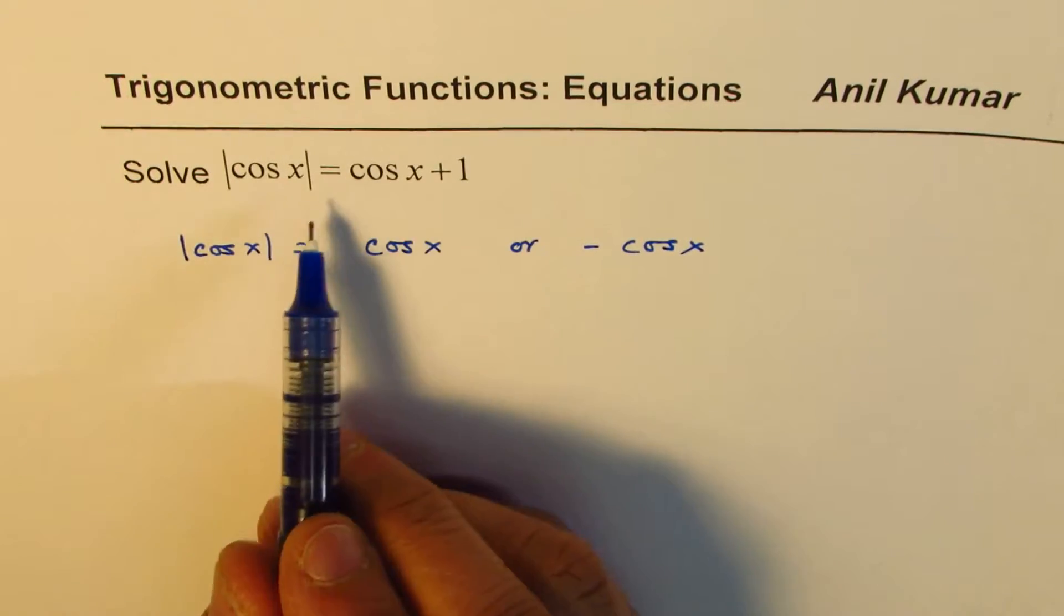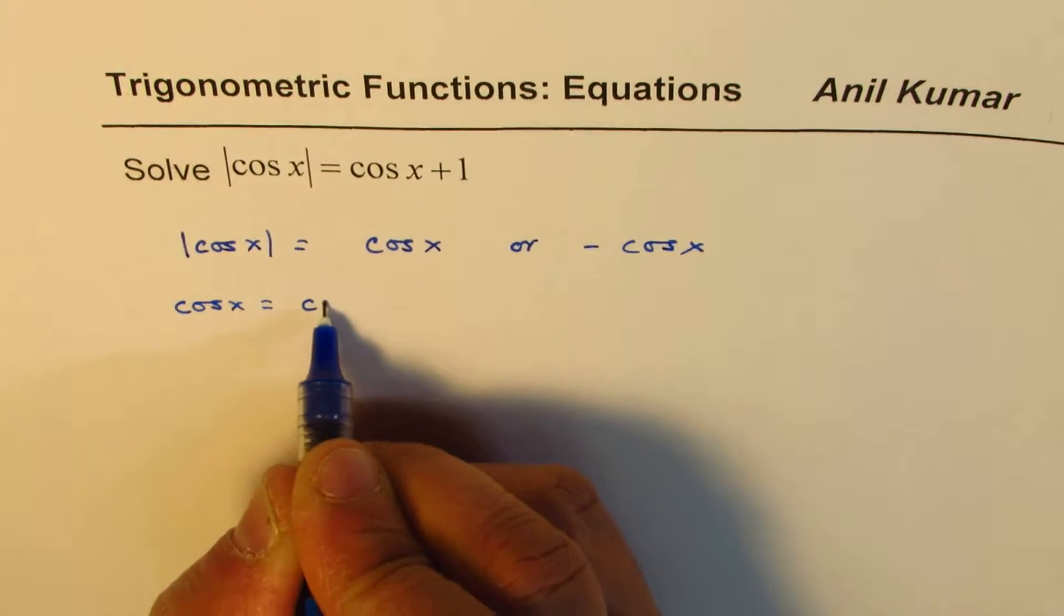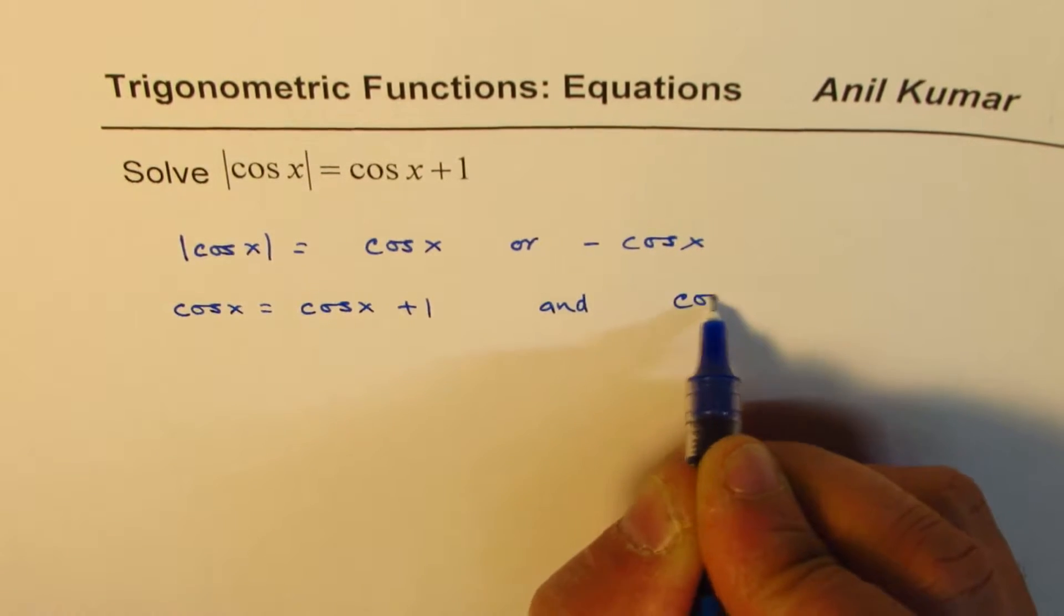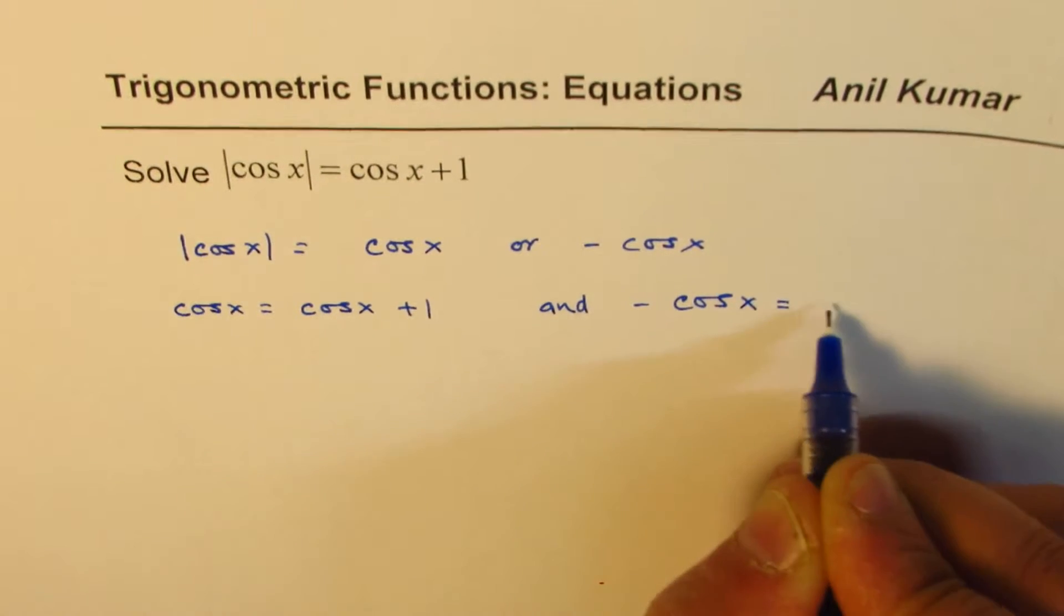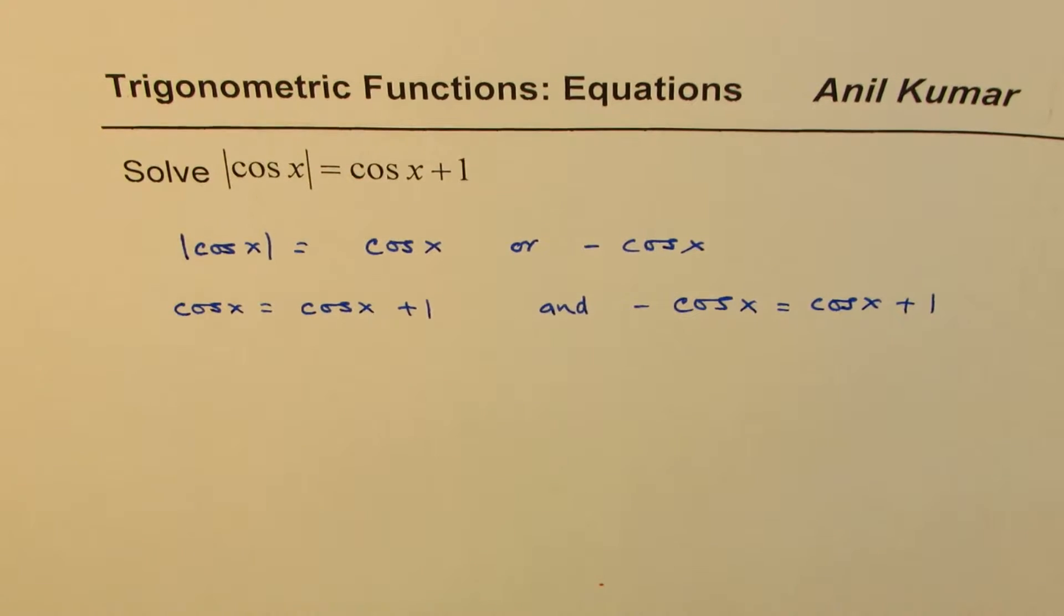So we can actually solve this equation for cos x equals cos x plus 1 and minus cos x equals cos x plus 1. Let's solve these two equations and then we can find our solution.